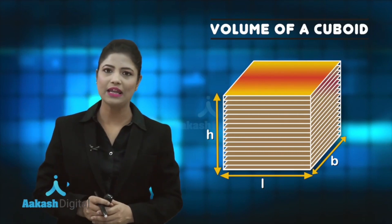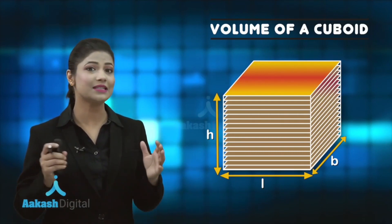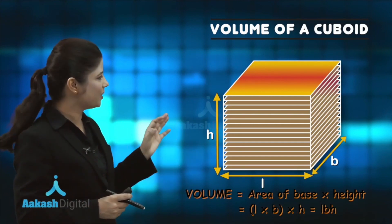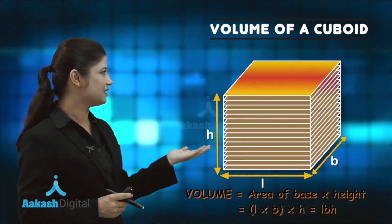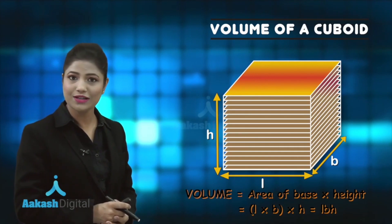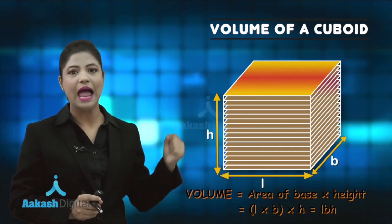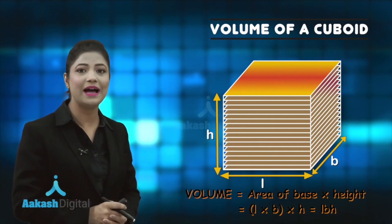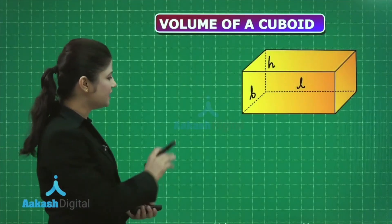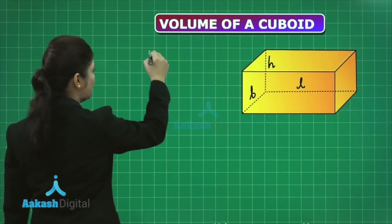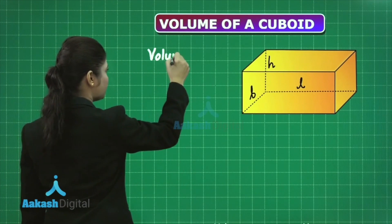You can easily obtain the volume of this cuboid, which is given by area of the base times height. In this case, the area of the base is the area of this rectangle. If you take its product with the height, you get the volume. Volume is the space occupied by the cuboid.